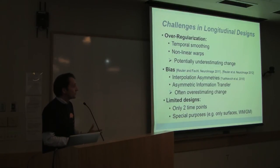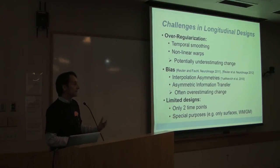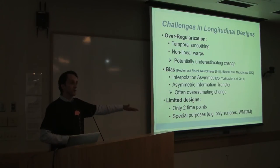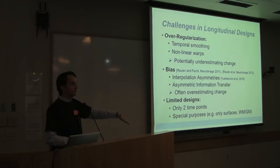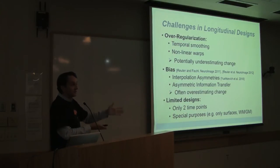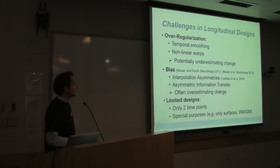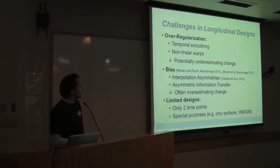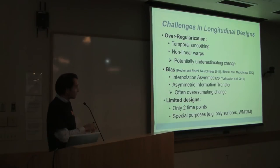There are a few problems in the processing step. One is called over-regularization — some methods enforce temporal smoothing, making data smooth across time. This is not a good idea because you assume the data changes smoothly, but it could be that there is one time point where it goes up, for example if you gave a drug at that time point. We want to find these changes; we don't want to a priori smooth anything out. This often leads to an underestimation of change.